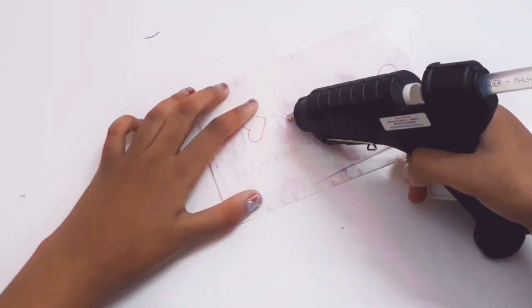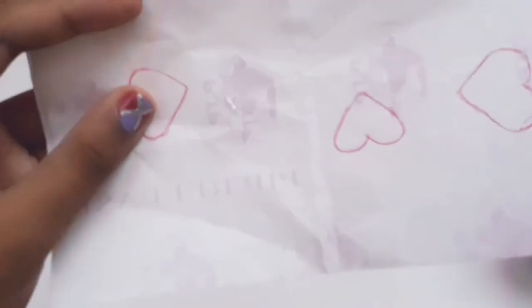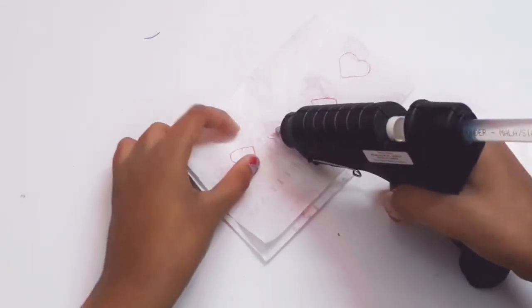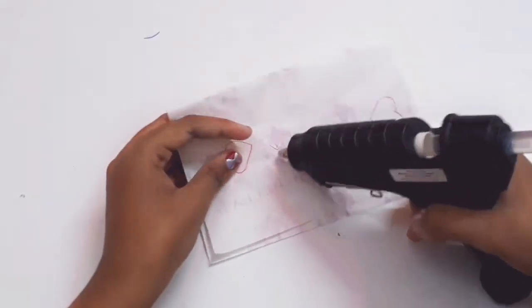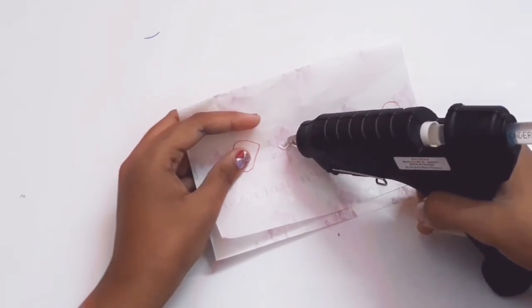So now you need to make droplets of glue gun into a heart shape so that it forms cute little hearts which we can drop inside the bottle.